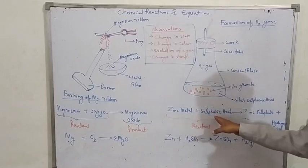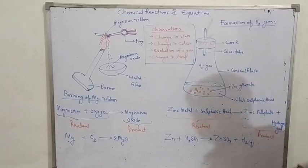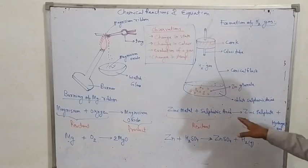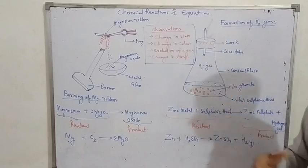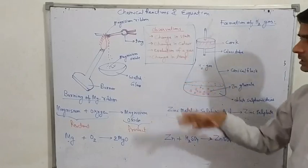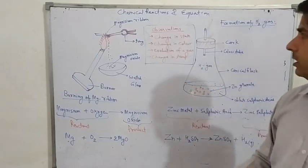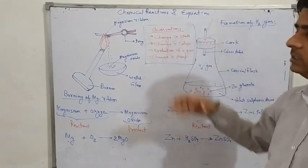When we add zinc metal to sulfuric acid, we get zinc sulfate and hydrogen gas as products. Here you can see hydrogen gas is produced. We can observe some key observations in these two chemical changes, such as the change in state.